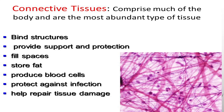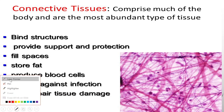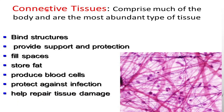What is connective tissue? Connective tissue, as the term suggests, is the tissue which connects different parts of the different organs or different tissues of the body. It comprises much of the body — connective tissue is found almost throughout the body and is the most abundantly found tissue out of all the four types.